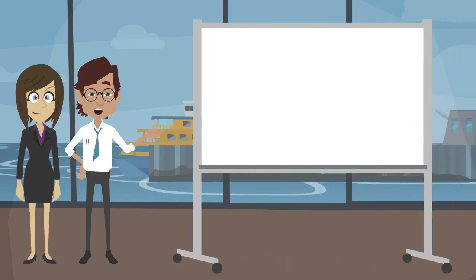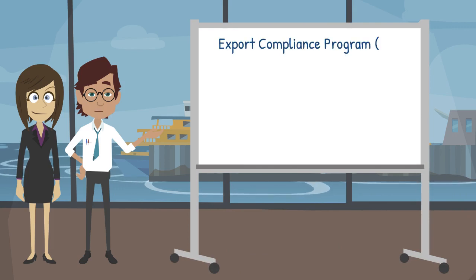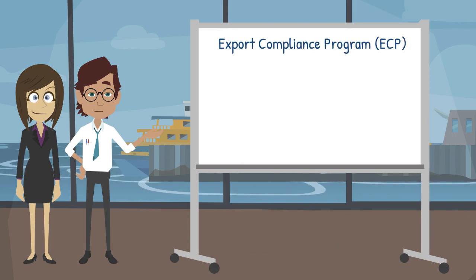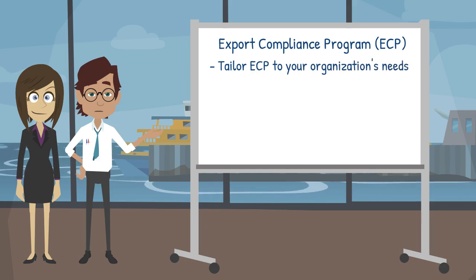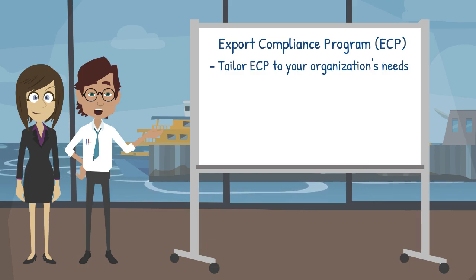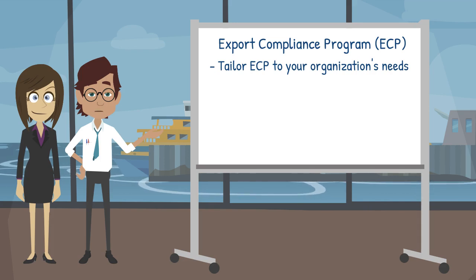But before we jump into the eight elements, here are a few tips to keep in mind. A whiteboard appears with the words 'Export Compliance Program, ECP.' One size does not fit all — your ECP should be tailored to your organization. What works for one company might not work for another. The words 'Tailor ECP to your organization's needs' is written on the whiteboard.